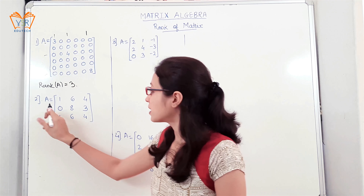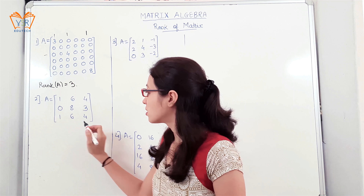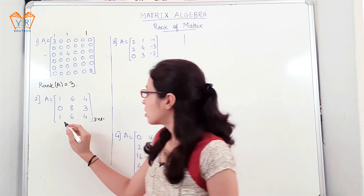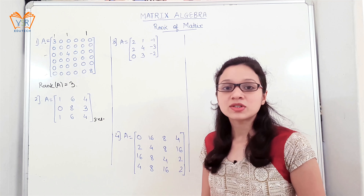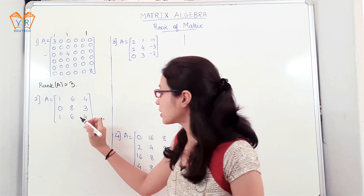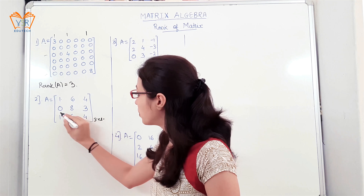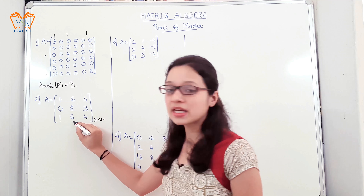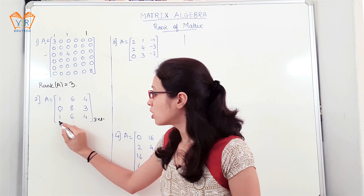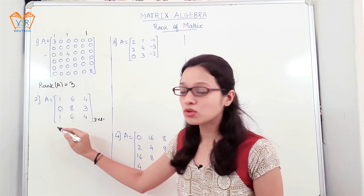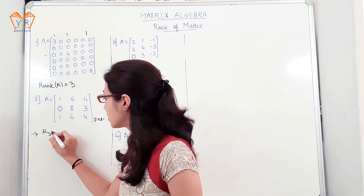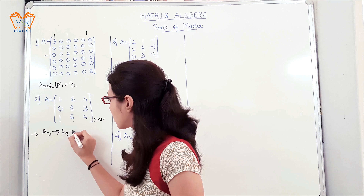The next example: find the rank of matrix A. Whenever we are asked to find the rank of a matrix, try to convert the given matrix into upper triangular form. Upper triangular means elements below the principal diagonal should be equal to 0. To make this element equal to 0, we will apply one elementary operation: R3 = R3 minus R1.